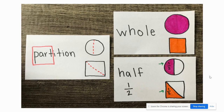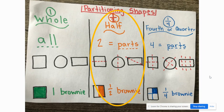We want to partition our whole into two equal parts, and that's what we know as a half. A half is when we take a whole and break it into two equal parts — one of those parts is considered a half. The center of our chart is circled to highlight that half has two equal parts. You'll see a square, a circle, and a rectangle, all of which are partitioned into two equal parts.